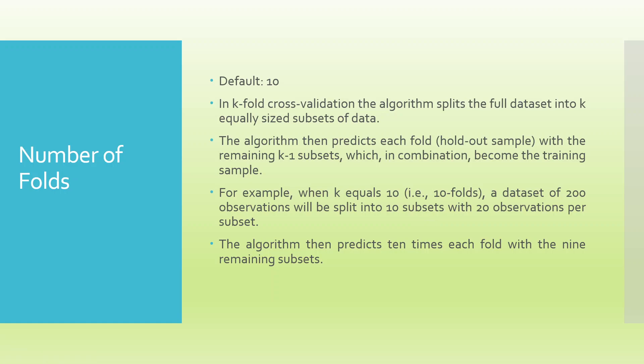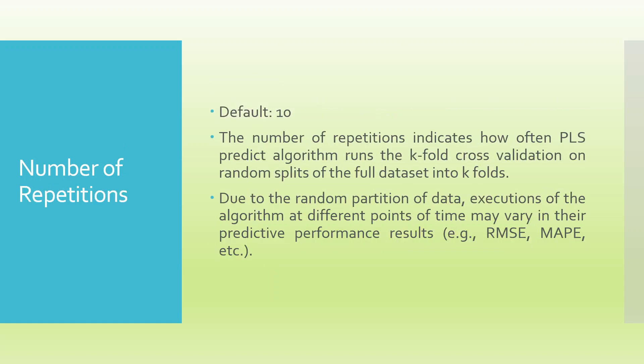The algorithm predicts 10 times each fold with the 9 remaining subsets. The purpose of doing this repeatedly is to get stable estimates of the coefficients. You also specify the number of repetitions, which indicates how often the PLS Predict algorithm runs a K-fold cross-validation on random splits of the full data set into K folds.